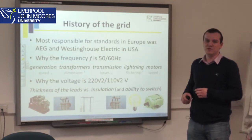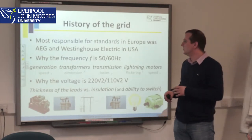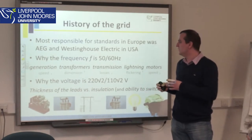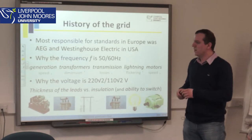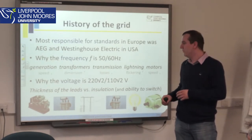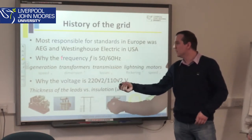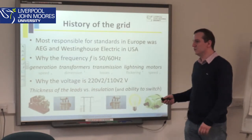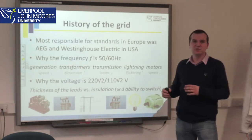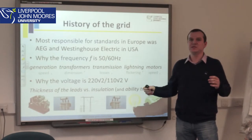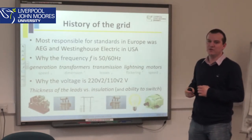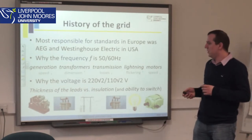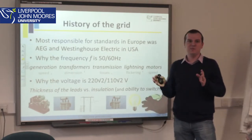The most responsible company in Europe for setting the standard was AEG, a German company, while in the USA it was Westinghouse Electric — and Nikola Tesla was working for Westinghouse. The frequency of 50 or 60 Hz was a compromise across different parts of the system. For generators, the frequency should be lower to avoid mechanical damage, while transformers — responsible for long-distance transmission by boosting voltage and reducing current — actually require higher frequency to reduce their physical dimensions.